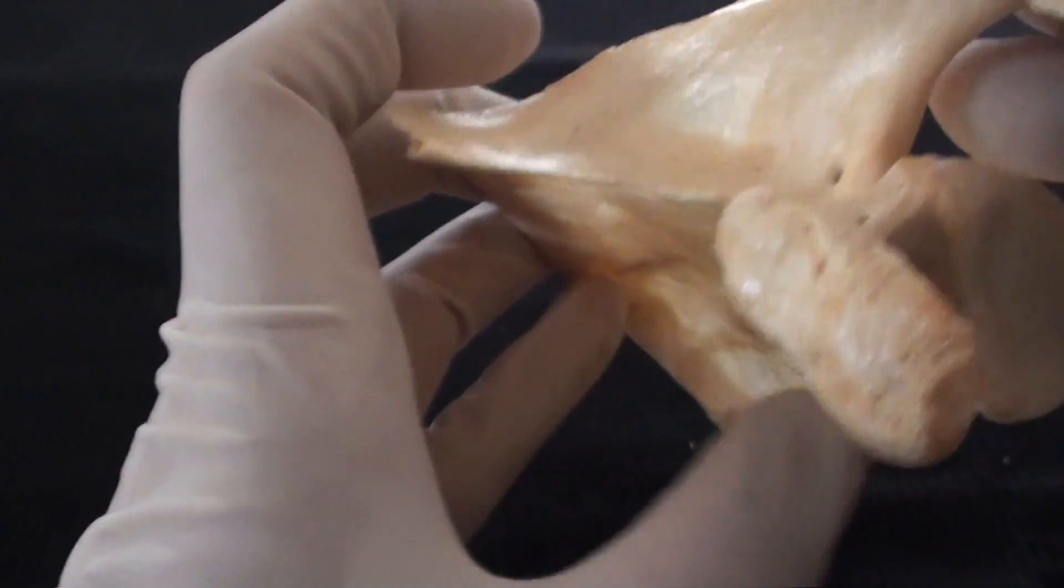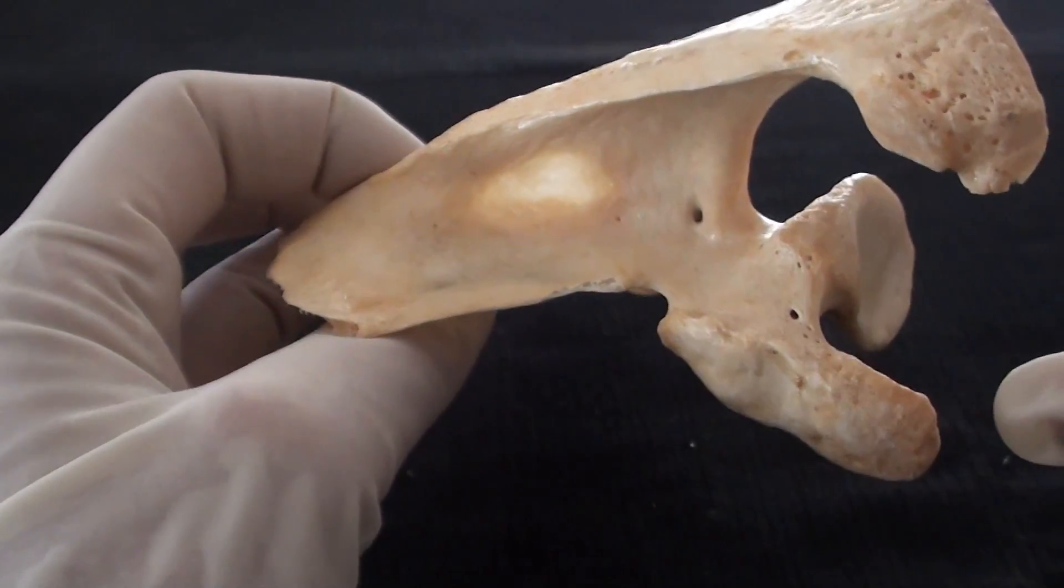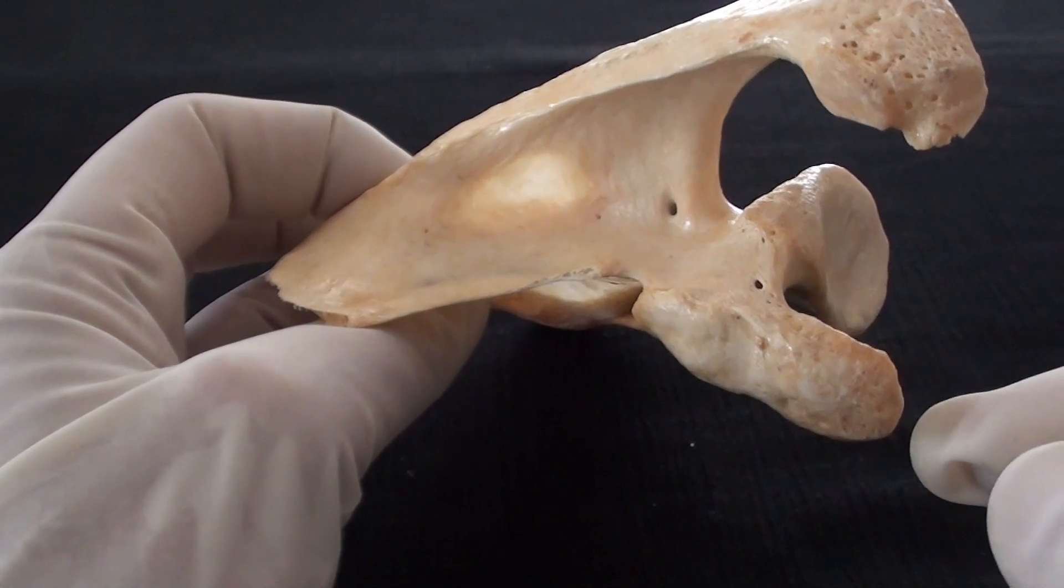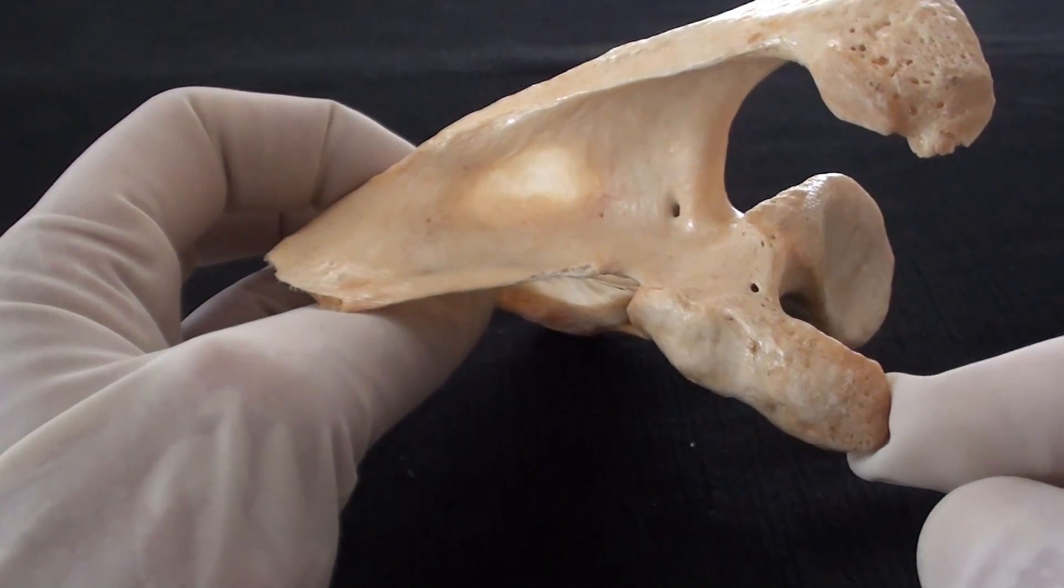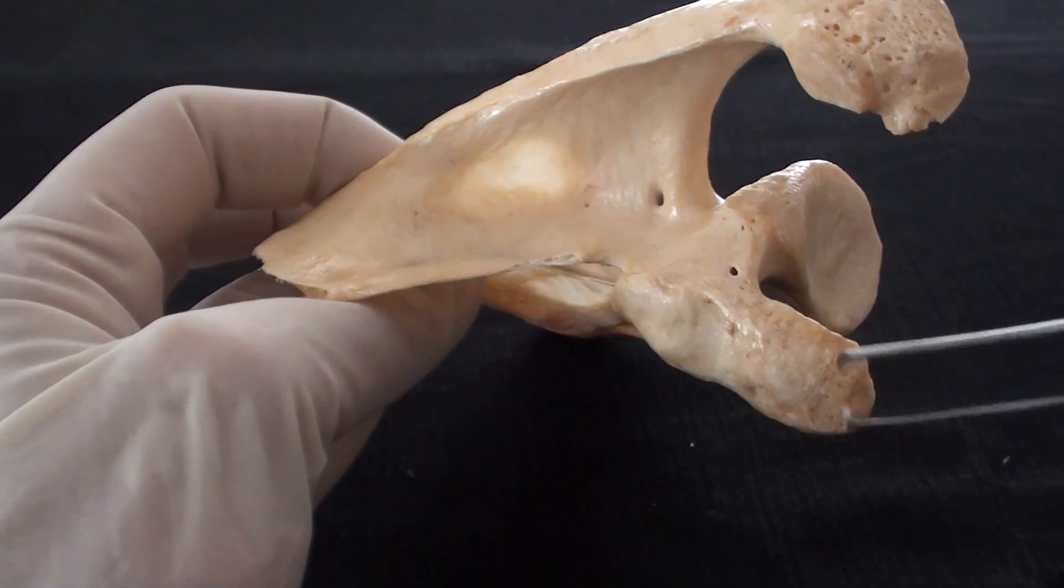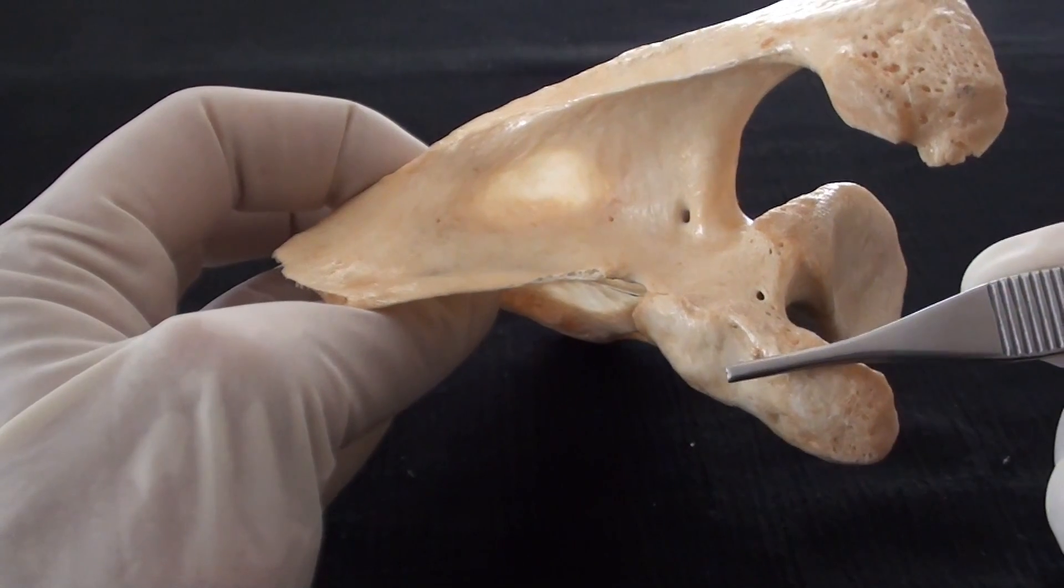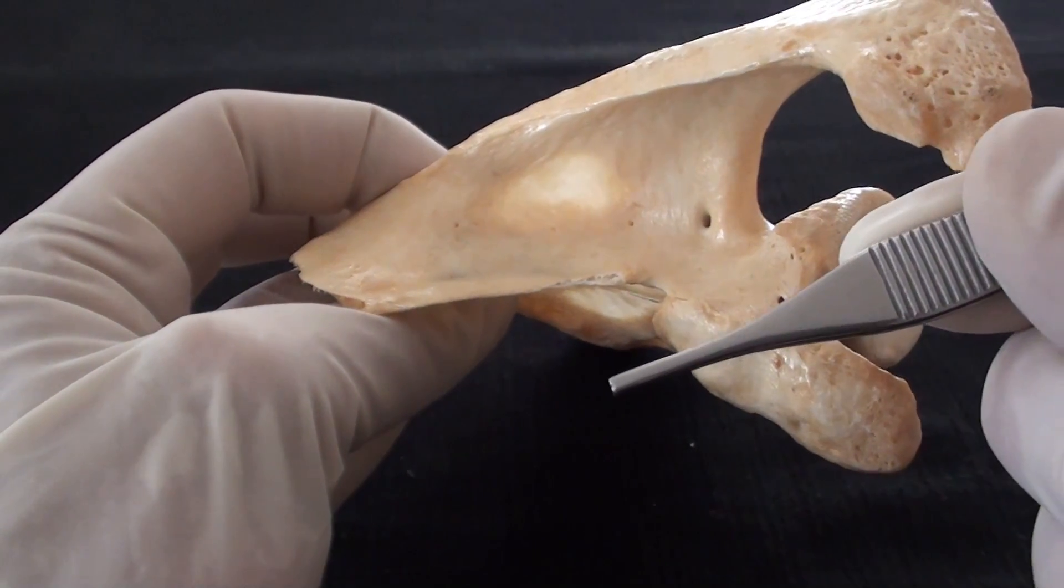The coracoid process makes significant projection forward relative to the rest of the scapula and as such actually projects itself further anterior relative to the position of the clavicle.